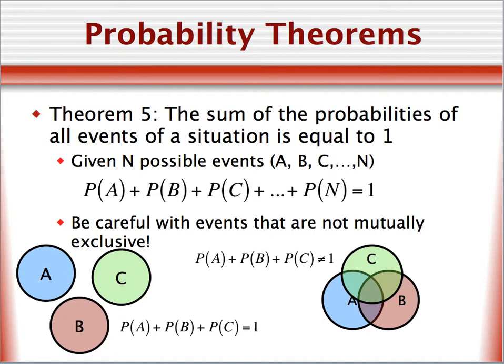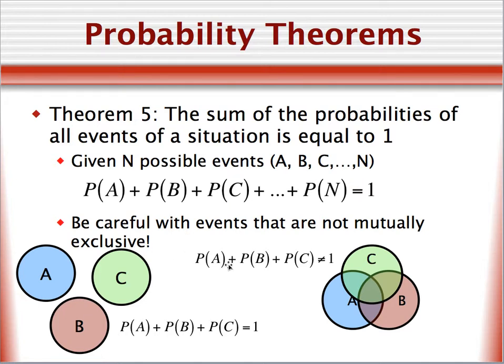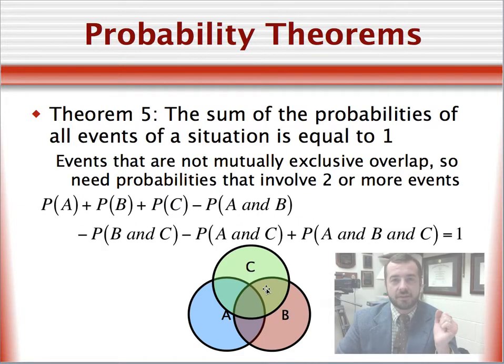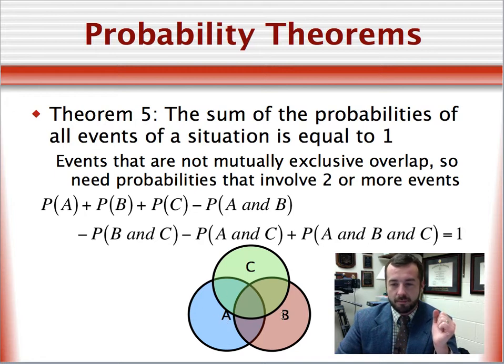Theorem 5 states that the sum of the probabilities of the events of a situation is equal to 1.000. In this case, all we have to do is add up all of the probabilities, and they should equal 1. But we have to be careful with events that are not mutually exclusive. In this case, all we have to do is add up the probability of each event occurring, A, B, and C, the blue, the orange, and the green areas.